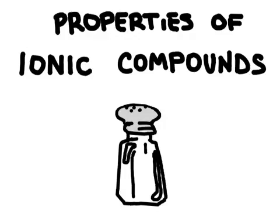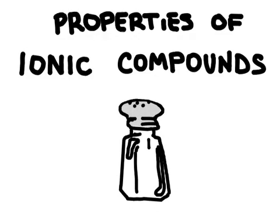In this video, we're going to talk about the properties of ionic compounds. Table salt is a very common ionic compound. And so if you can imagine the properties of table salt, that's going to be true for other ionic compounds as well.